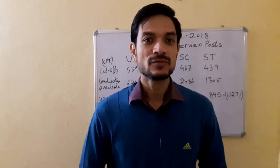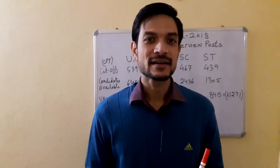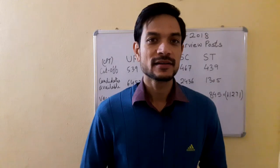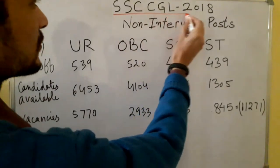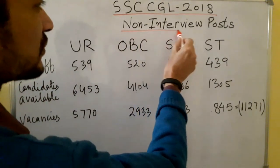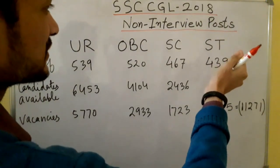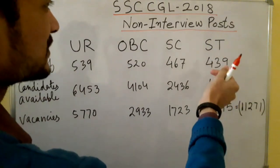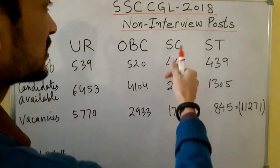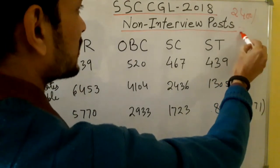So in this video, I am going to take a look at the non-interview post for CGL 2018 — specifically the result of the non-interview post. Non-interview posts include Tax Assistant, CBDT, CBIC, and C&AG. I will also cover UDC posts. These are all non-interview posts which are grade pay 2400 or 2800.